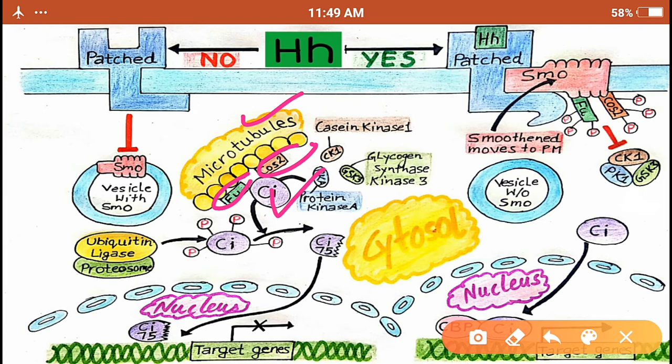three phosphorylating enzymes known as protein kinase A, glycogen synthase kinase 3 or GSK3, and casein kinase 1. The action of these enzymes on CI phosphorylates CI on various positions. Then these phosphorylated sites serve as binding sites for another enzyme which is known as ubiquitin ligase.